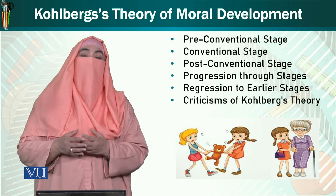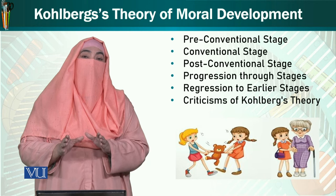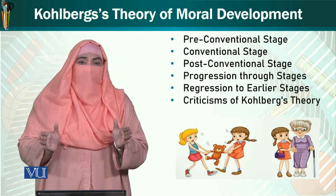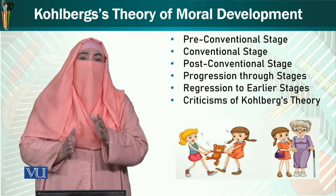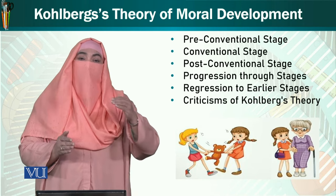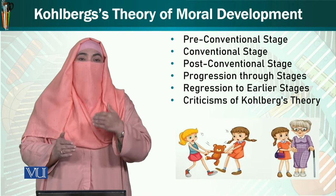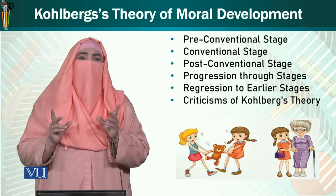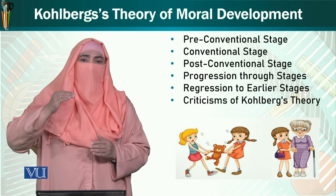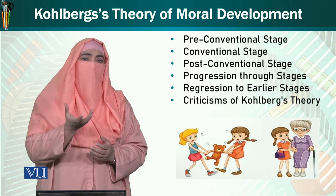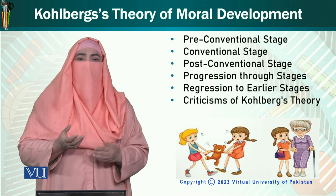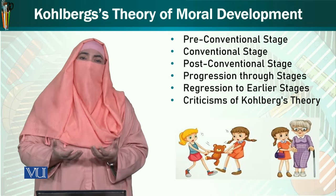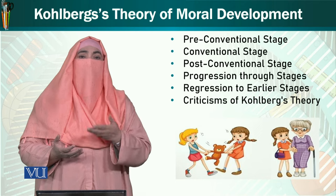وہ اپنی value سے نیچے بھی آ سکتا ہے. آخری بات یہ ہے کہ Kohlberg کی theory کو criticize بھی کیا جاتا ہے، لیکن اخلاقیات کی تمام theories میں اسے بہت زیادہ اہمیت حاصل ہے. تنقید یہ ہے کہ یہ theory صرف cognitive process کو دیکھتی ہے — کہ ہم mentally reasoning اور decision making کس طرح کرتے ہیں — لیکن ہمارے emotions اور social environment کے بارے میں بات نہیں کرتی۔